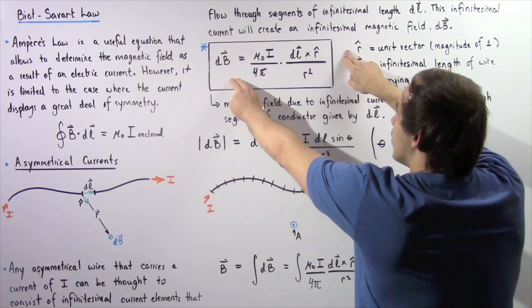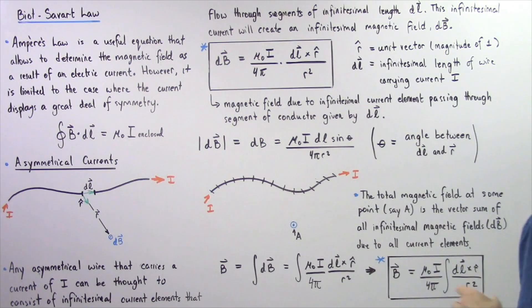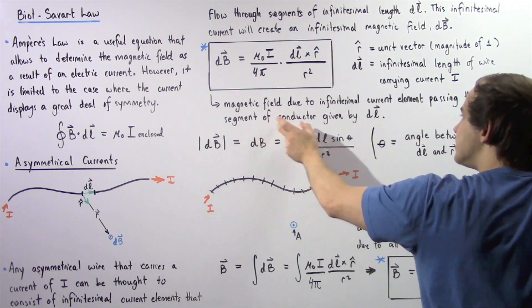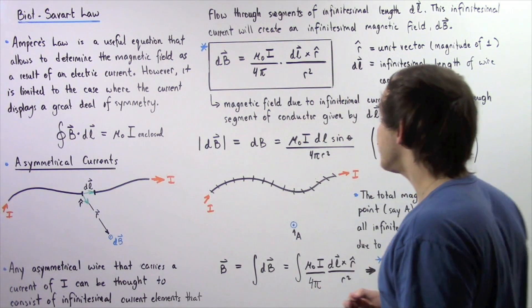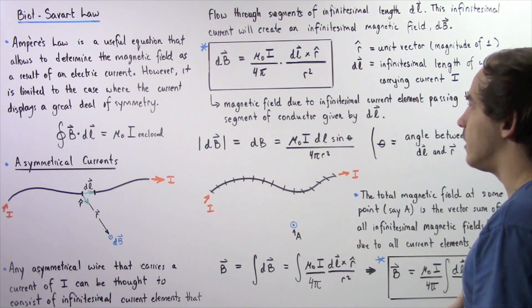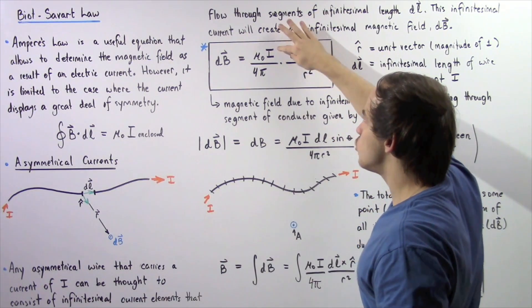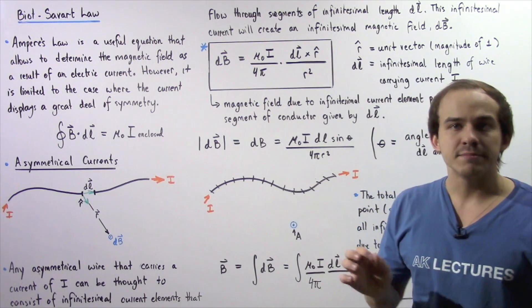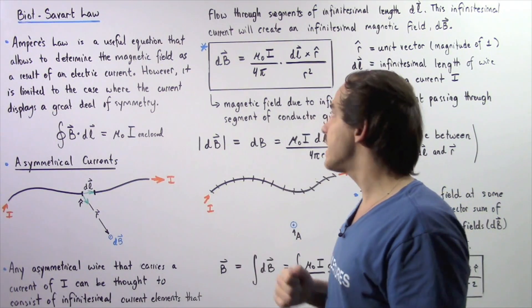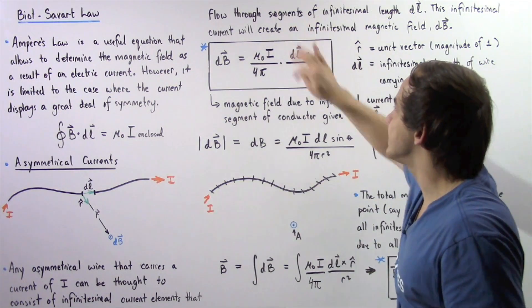The Biot-Savart Law tells us that this infinitely small current element will create an infinitely small magnetic field dB at a distance given by vector R from the segment DL. The Biot-Savart Law gives us the magnitude of the magnetic field due to an infinitely small current element passing through a segment of conductor DL. Notice this ratio is a constant: I is assumed constant, mu naught — the permeability of free space — equals 4π × 10⁻⁷ T·m/A, and 4π is also a constant.